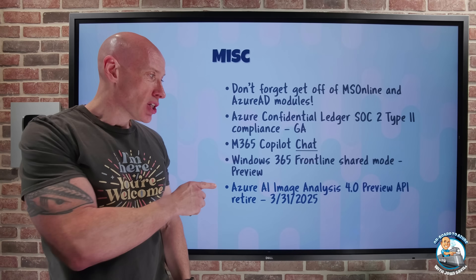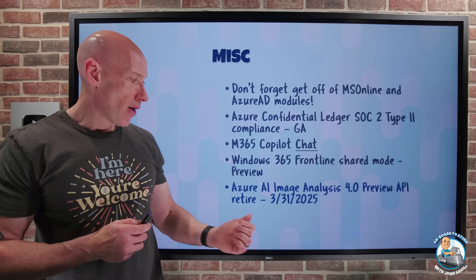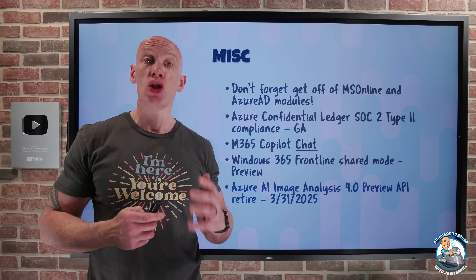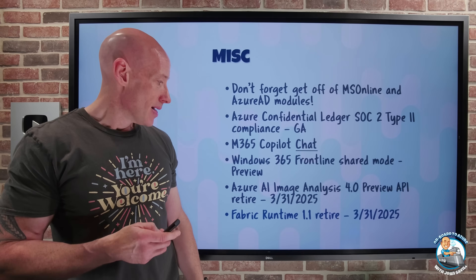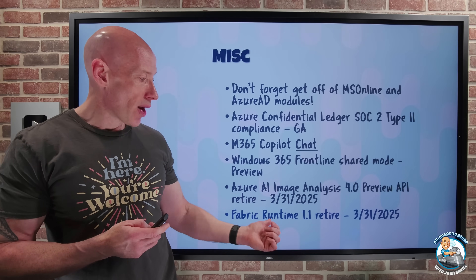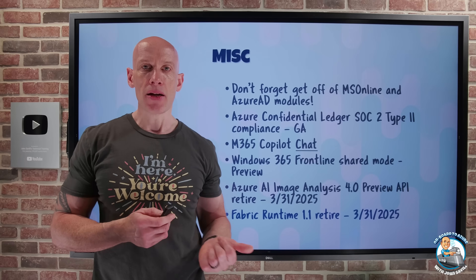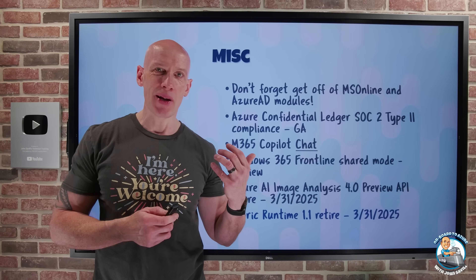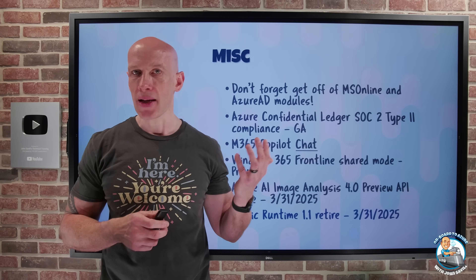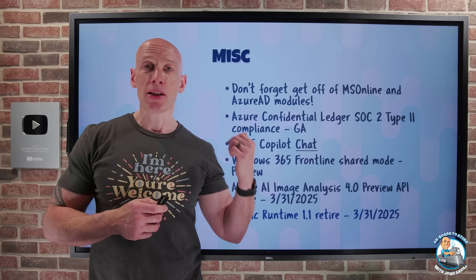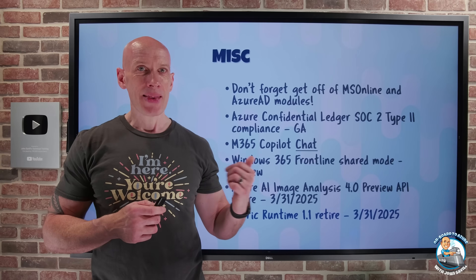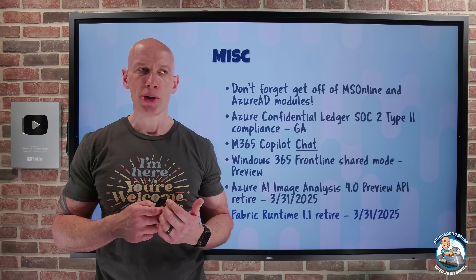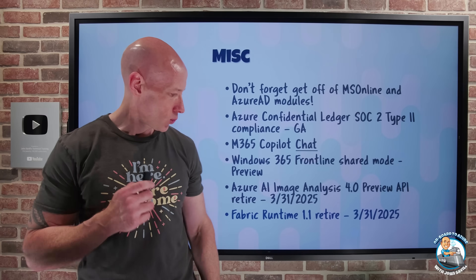The Azure AI Image Analysis 4.0 Preview API is retiring end of March — you need to migrate to the Image Analysis 4.0 GA API. Also, Fabric Runtime 1.1 is retiring end of March. The runtime is used for execution and management of your data engineering and data science experiences. You need to get to the 1.3 runtime, which incorporates Apache Spark 3.5, Delta Lake 3.2, and a bunch of other improvements.